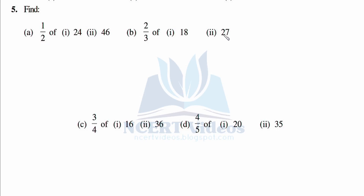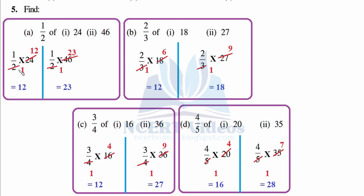Question number five: find half of twenty-four and forty-six; two by three of eighteen. 'Of' means multiplication. One over two times twenty-four — one to two, twelve to twenty-four — answer is twelve. Half of forty-six: one to two, two to four, twenty-three times one is twenty-three. Two by three of eighteen: one three is three, six three is eighteen — times two gives twelve. Two by three of twenty-seven: one three is three, nine three is twenty-seven — times two gives eighteen.